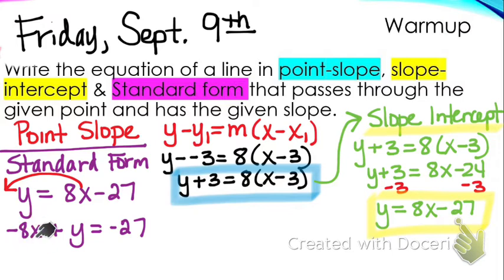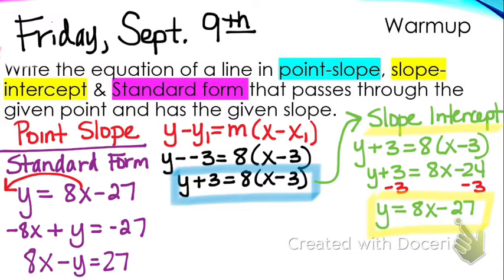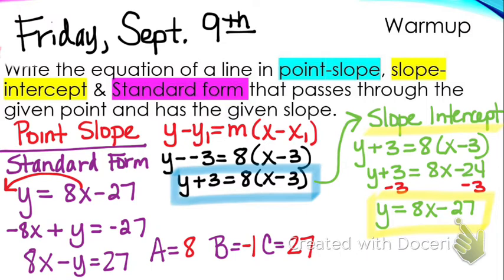We have to make it positive. So what am I going to multiply the entire equation by? Just negative 1. Take this equation and multiply it by negative 1 — the entire equation. That's going to give you positive 8x minus y equals positive 27. So in standard form, A is positive 8, B is negative 1, and C is 27. That is standard form.